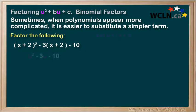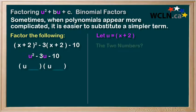If we replace the x plus 2 with the letter u, we can see we have u squared minus 3u minus 10. So we'll factor that. We know there's going to be a u in the front of each bracket, and we now need to find the two numbers that go in the back.